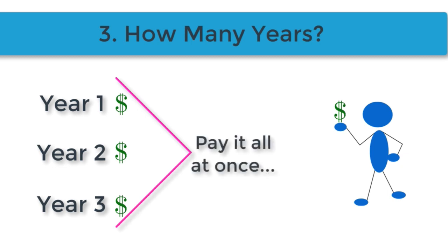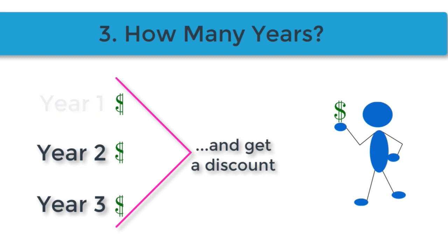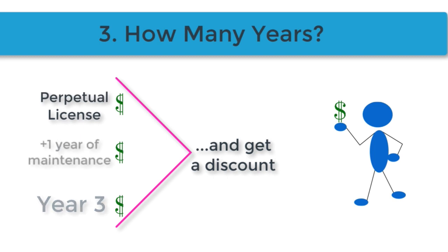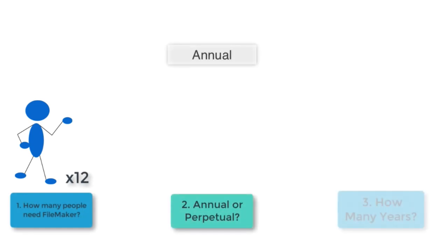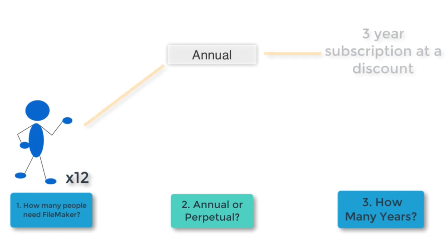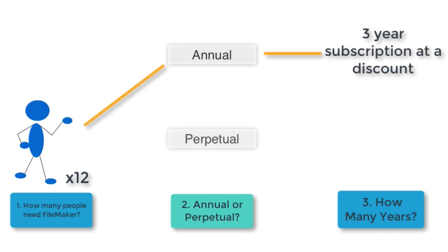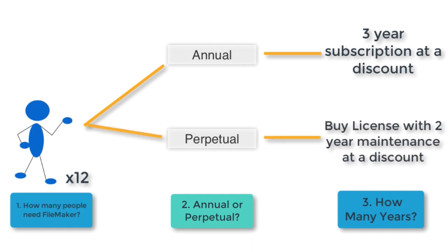FileMaker offers a discount if you buy multiple years at one time. Depending on availability, you may also be able to get multiple years of maintenance added with a perpetual license. For example, you could take 12 employees and buy three years of a subscription up front and get a discount, or buy the perpetual license and add two additional years of maintenance. In both cases, you would have all the latest versions for 12 users over three years.